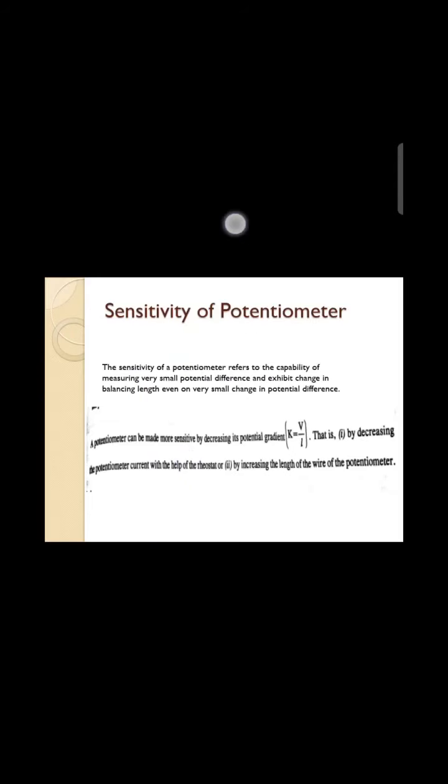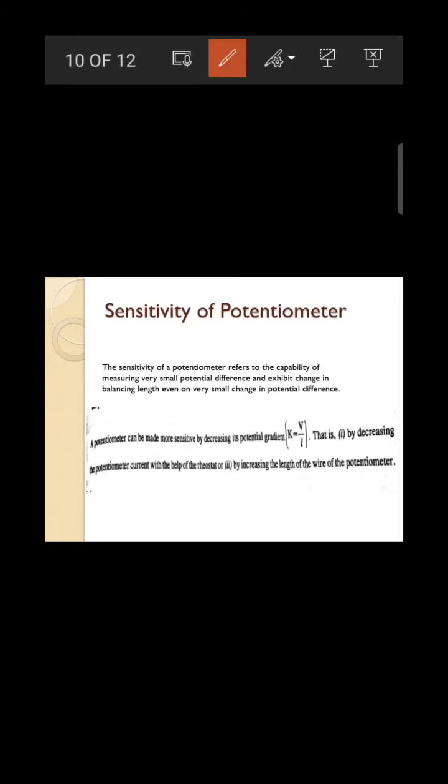The potential gradient K is very important. It tells us how much potential drop occurs per unit length. It also decides the sensitivity of the potentiometer — sensitivity means the potentiometer can detect even a small change in balancing length and record that observation.